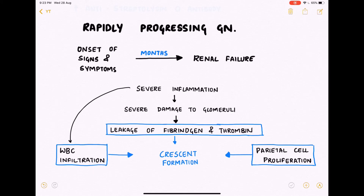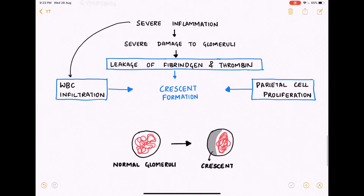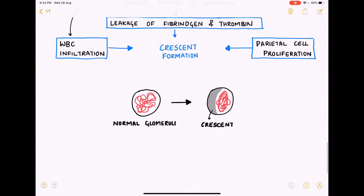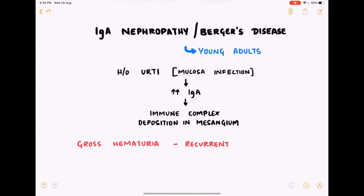This damage leads to leakage of large protein molecules such as fibrinogen and thrombin. Combined with WBC infiltration and parietal cell proliferation, this leads to crescent formation. The image shows how a glomerulus with crescent formation looks in contrast to a normal glomerulus.